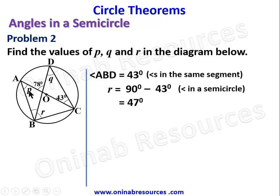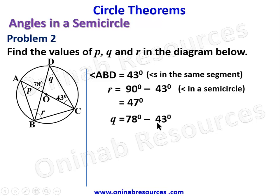Now we look at P and Q. The lines forming angle P and Q both originate from B and C. Looking at triangle DOC, this is an exterior angle with opposite interior angles. We say Q equals 73 degrees minus 43 degrees — exterior angle of a triangle equals sum of opposite interior angles — giving Q equals 35 degrees.